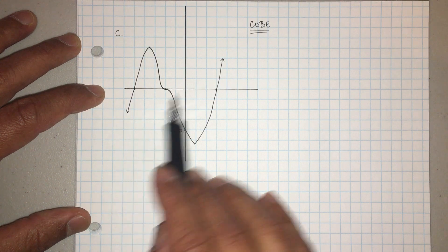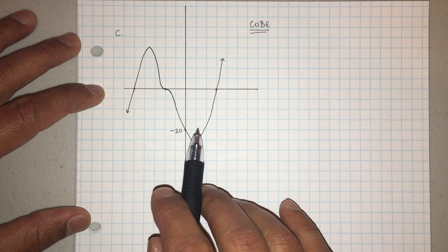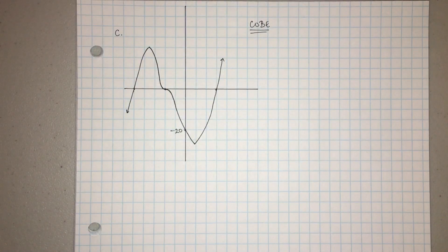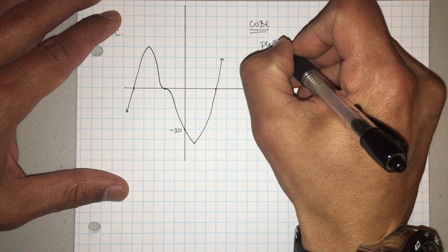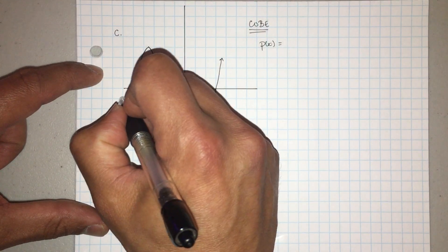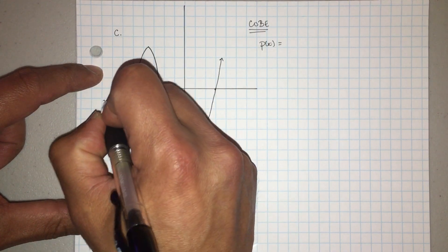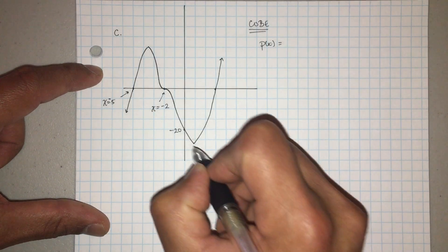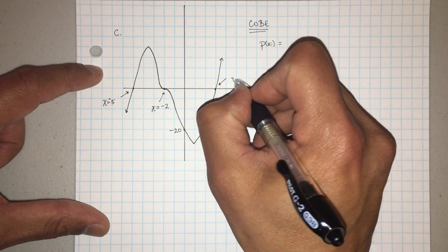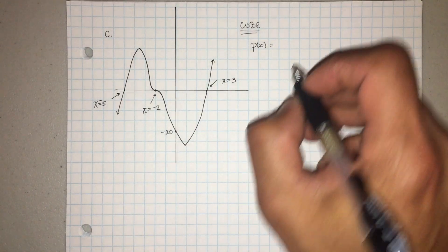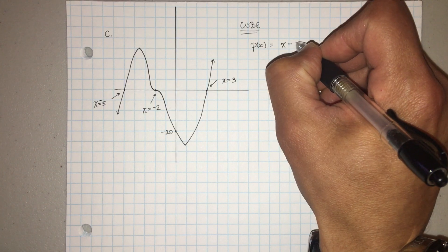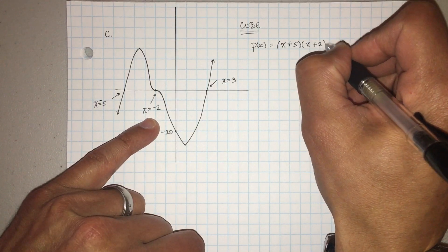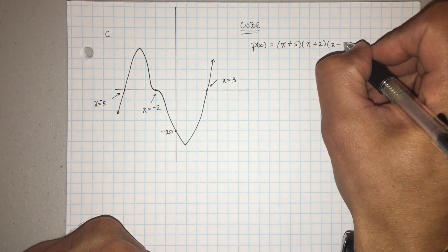This one is up on the right and down on the left, so that tells me it's odd — a three, five, seven, nine, something like that. Now let's look at the roots. That guy is x equals five, this guy is x equals negative two, that's x equals negative five, and this guy right here is x equals three. So we have three roots. X equals negative five becomes x plus five, x equals negative two becomes x plus two, and x equals three becomes x minus three.